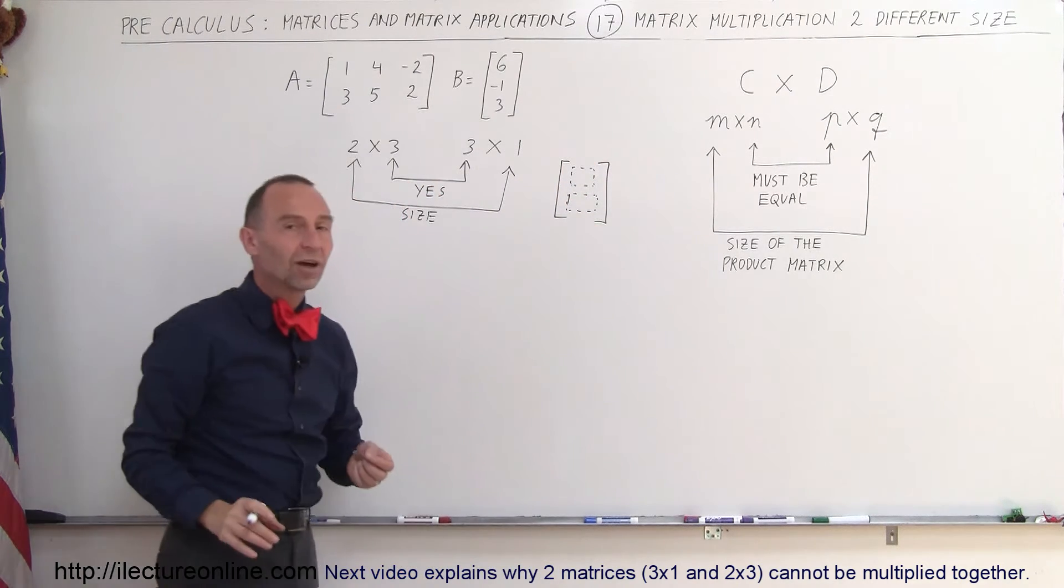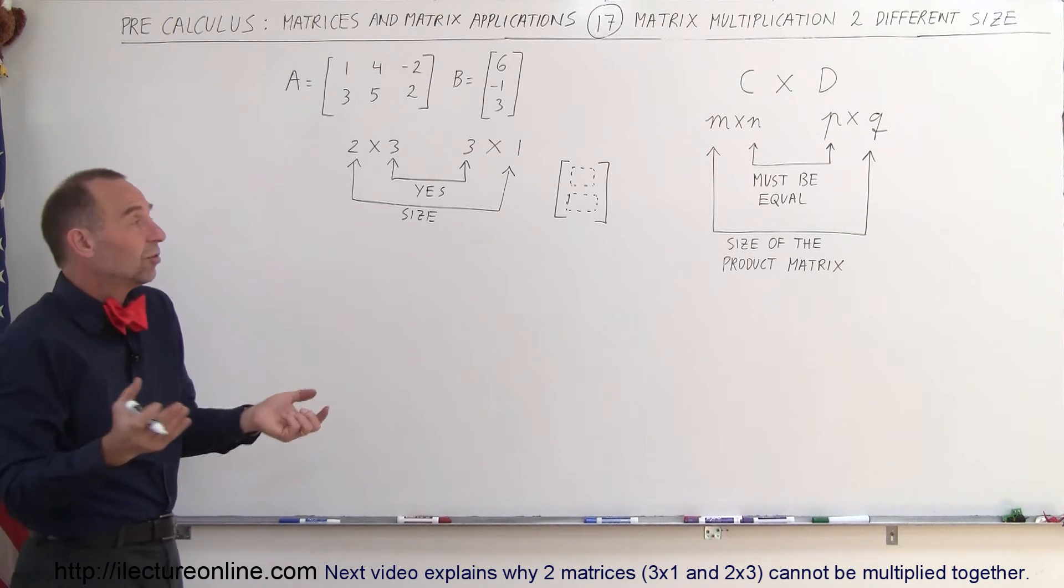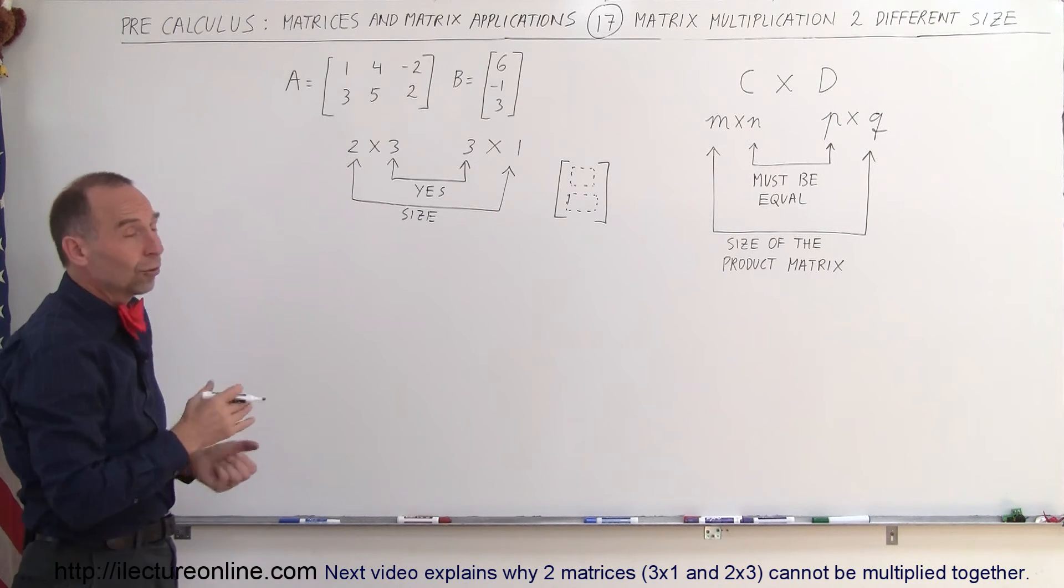So that will be the size of the resulting product matrix. You'll just have two elements, two rows, one column.